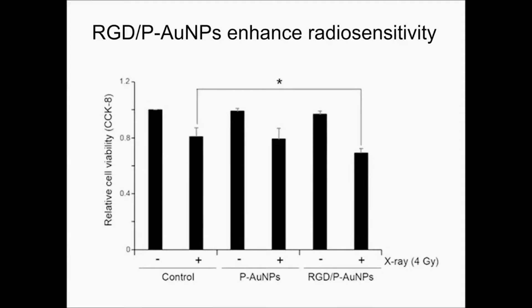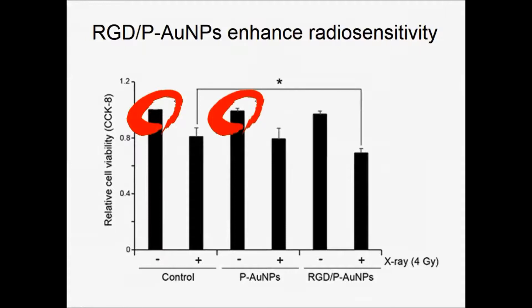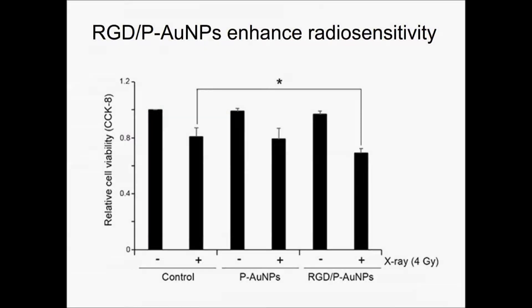In the cell viability assay, we can see that the gold nanoparticles would not harm cells without radiation. But after radiation, the RGD-conjugated gold nanoparticle group showed a decrease in cell viability compared to radiation alone.